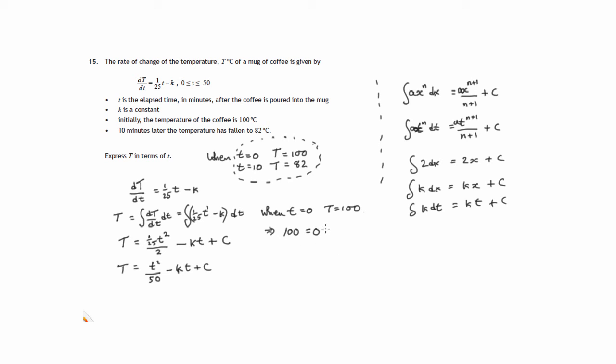That's 0. Minus k times 0. That's 0. Plus c. So the constant c is equal to 100.